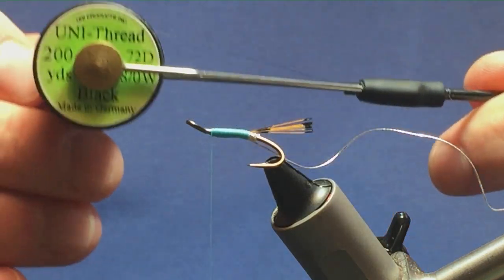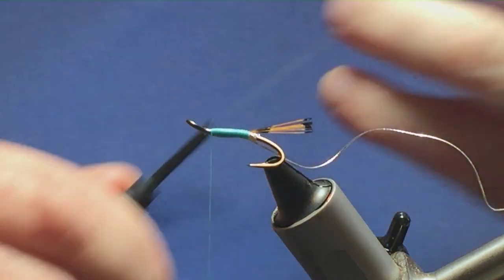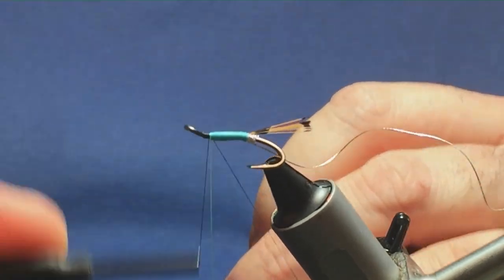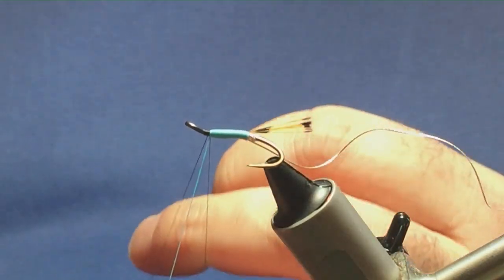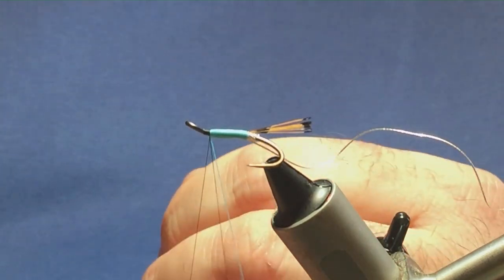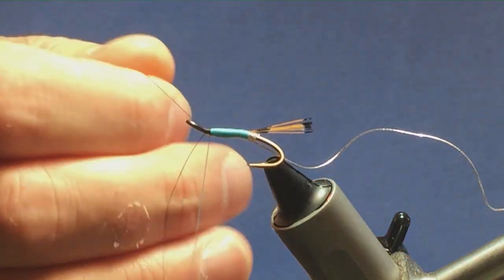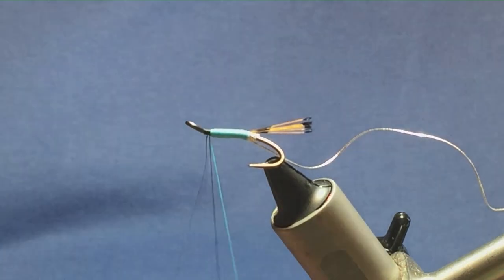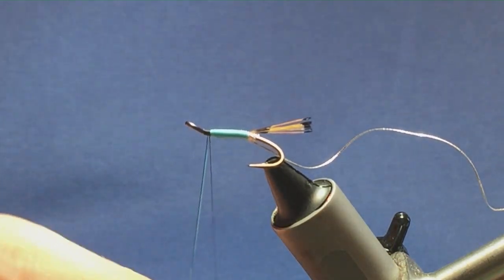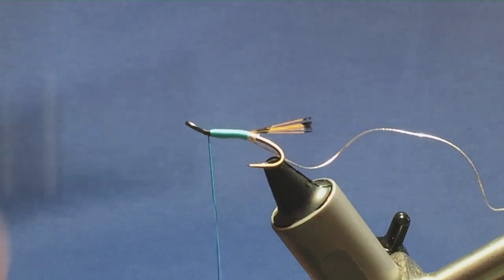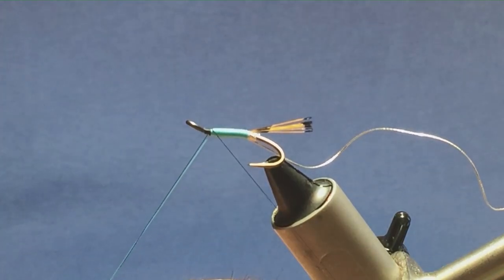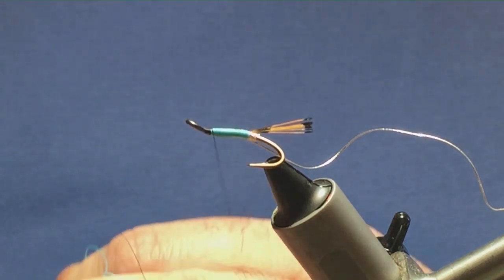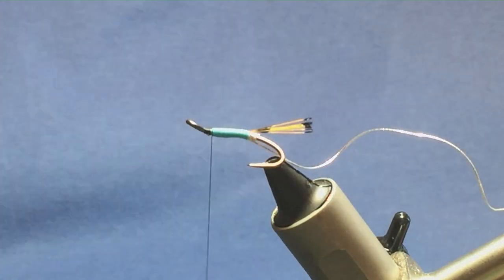So we're going to finish off with the Uni-thread black. So just start your thread off by the eye. Then all you want to do is keep the hold of the waste tag as well, just bring the thread round, a couple of turns in. This just secures it in a wee bit better for you. Right push your thread out of the way. Come in with your scissors and remove the glow braid floss and the excess tag of the black thread.